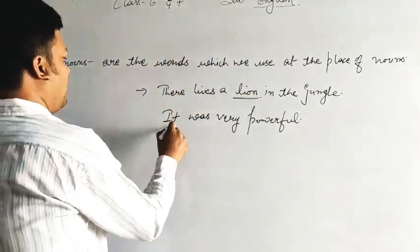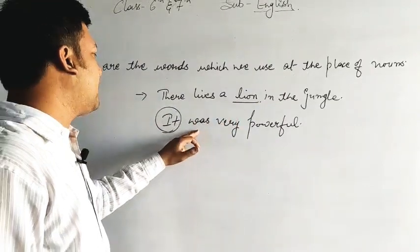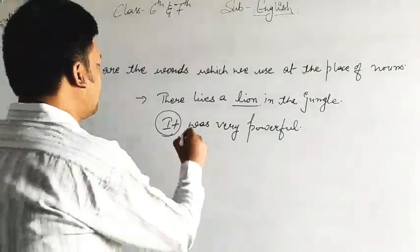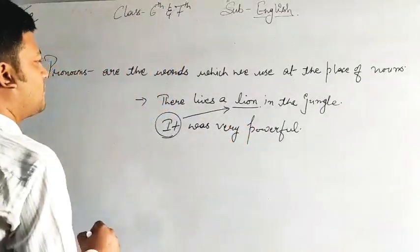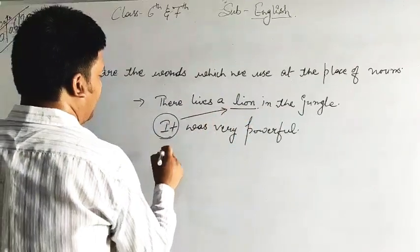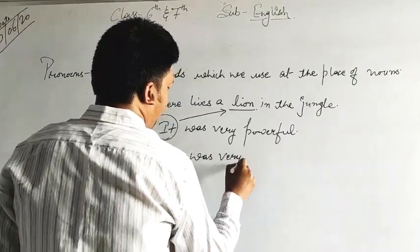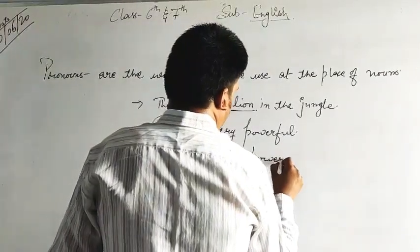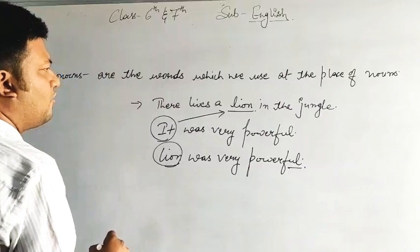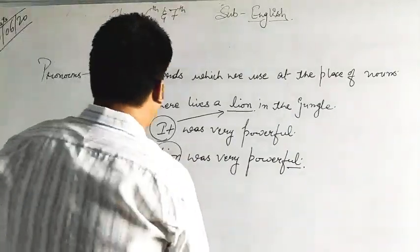It was very powerful. So when I write 'it', it is my pronoun here. Why? When I am saying there lives a lion in the jungle, and when I read the second line 'it was very powerful', what does 'it' mean here? It means this lion. So when I am using a pronoun at the place of the noun again and again, I can write like this also: 'lion was very powerful.' Instead of repeating the noun word again and again in the sentence, I use pronoun instead of the noun. That is the basic work of the pronouns.